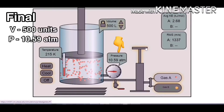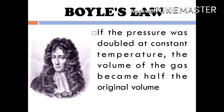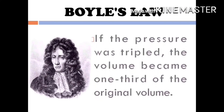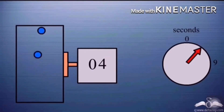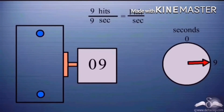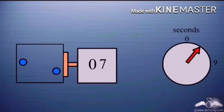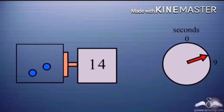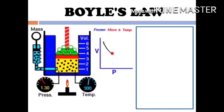This observation is the same as what Robert Boyle observed in his experiment. Boyle observed that if the pressure was doubled at a constant temperature, the volume of the gas became half the original volume. And if the pressure was tripled, the volume became one third of the original volume. As you see in this experiment, you have gas enclosed in a container. In 9 seconds, there are 9 hits, so there is 1 hit per second. When the volume is reduced to half, in the same 9 seconds, there are 18 hits — so there are 2 hits per second. Hence, reducing the volume of the container by one half results in doubling the number of hits and the pressure.